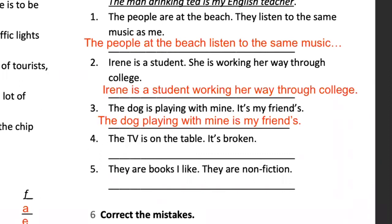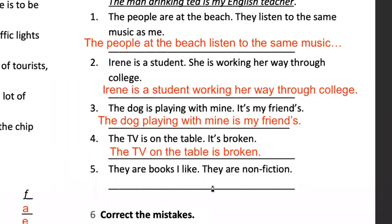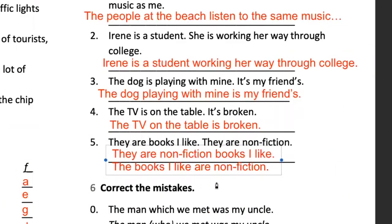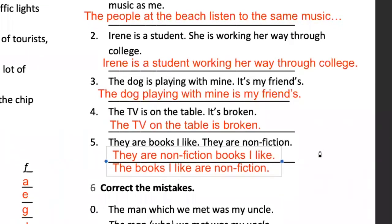Number four: 'The TV on the table is broken.' Easy. Number five: 'They are non-fiction books I like.' Another option could be 'The books I like are non-fiction.' It can work either way. I thought that was really good, Alessandra — very impressive. I was expecting the second one, but your answer was good.